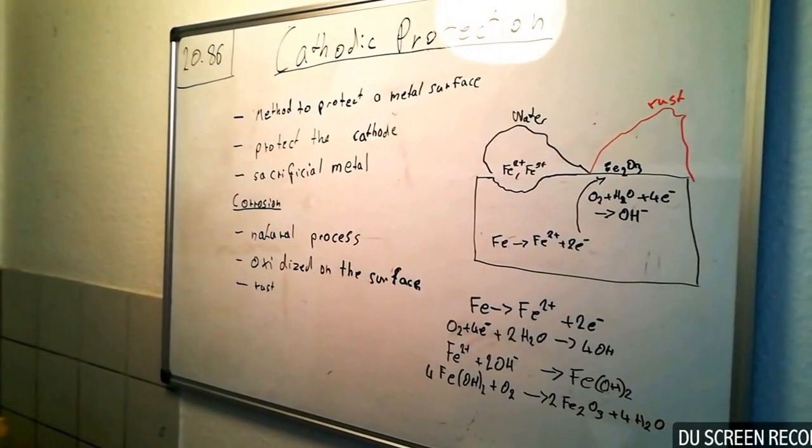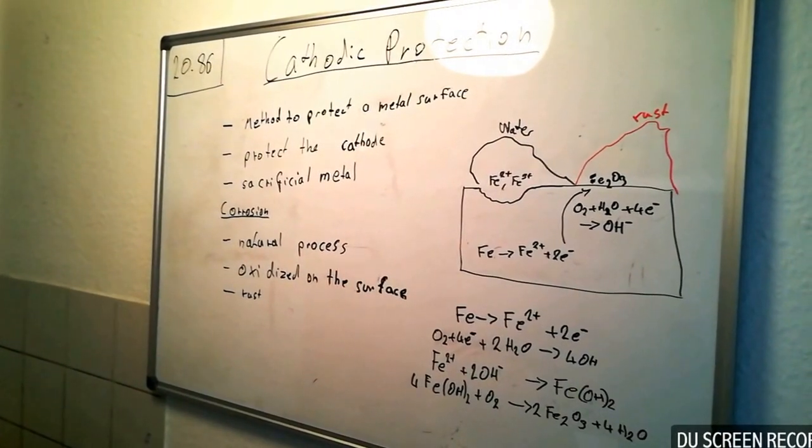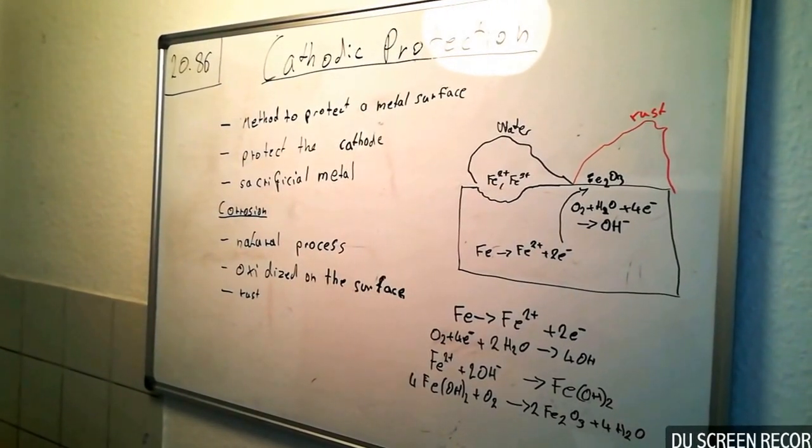The task is: an iron object is plated with a coating of tin to protect against corrosion. Does the tin protect iron by cathodic protection?